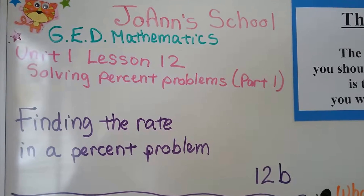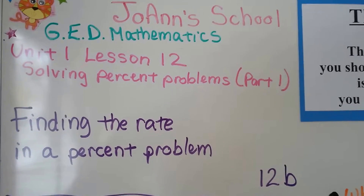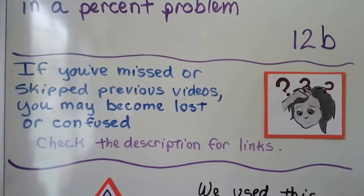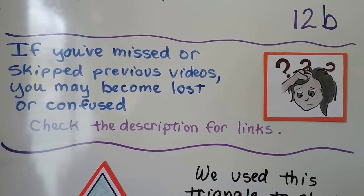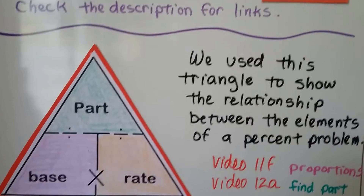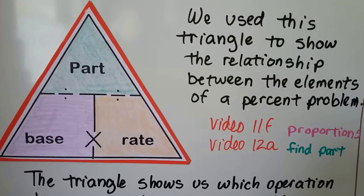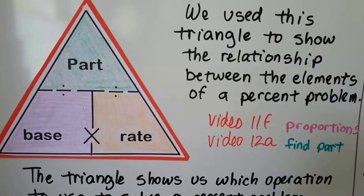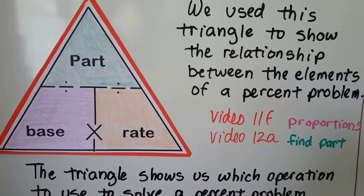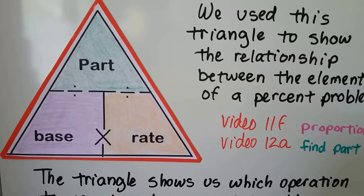Now we're going to be finding the rate in a percent problem. This is lesson 12b. I've got links to 12a and the previous videos you might need in case you become lost or confused — just click the description. We've used this triangle to show the relationship between the elements of a percent problem. In video 11f we solved using proportions, and in 12a we found the part, the top part of the triangle.